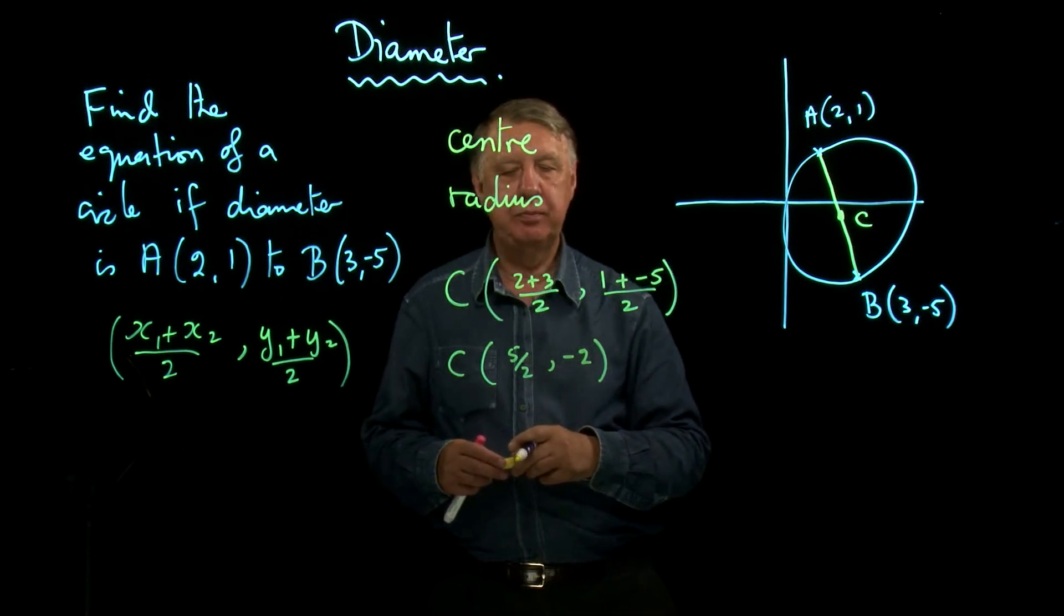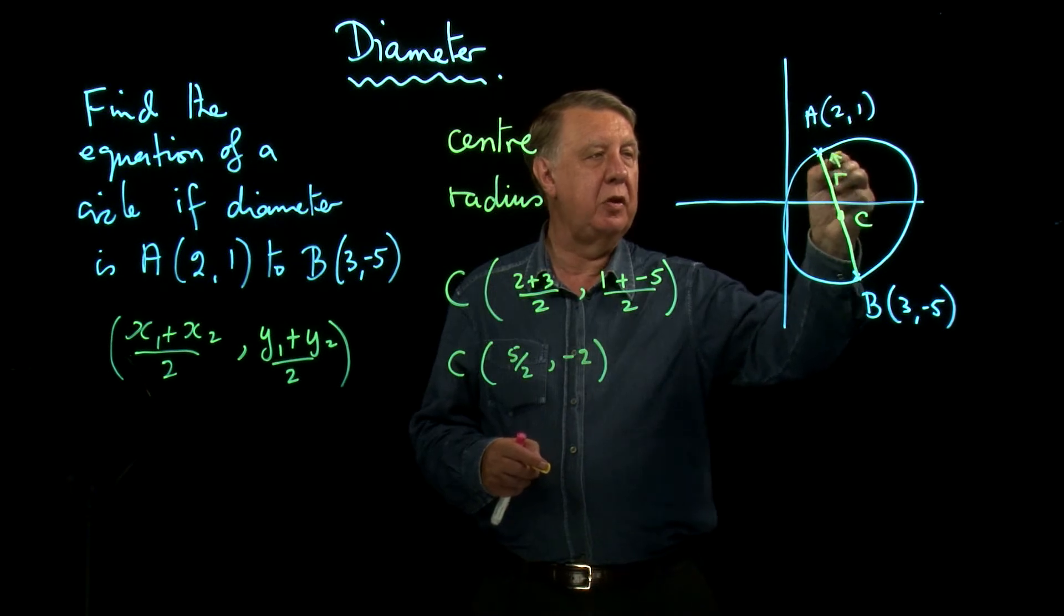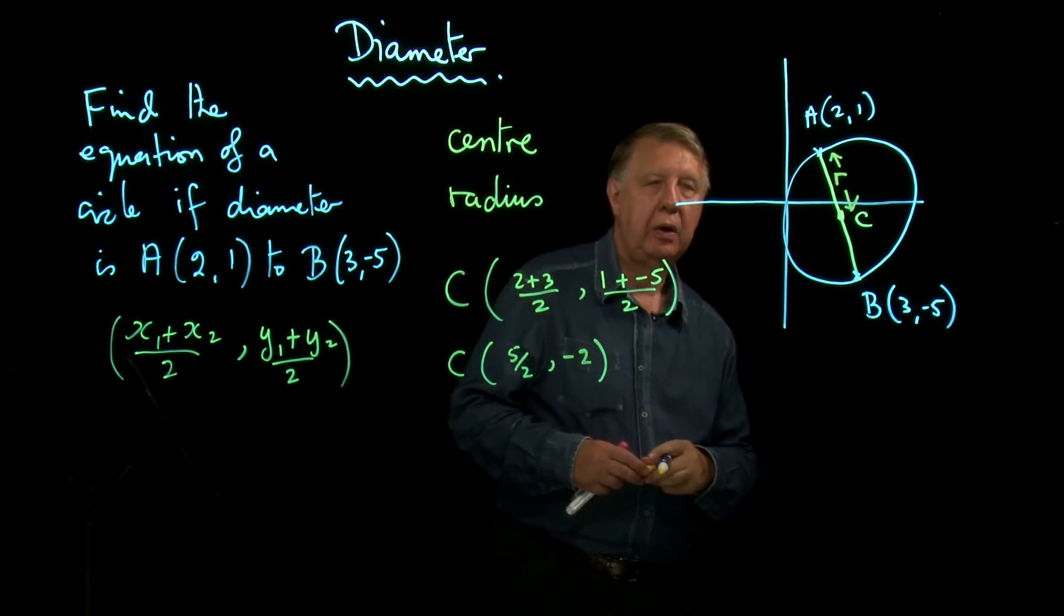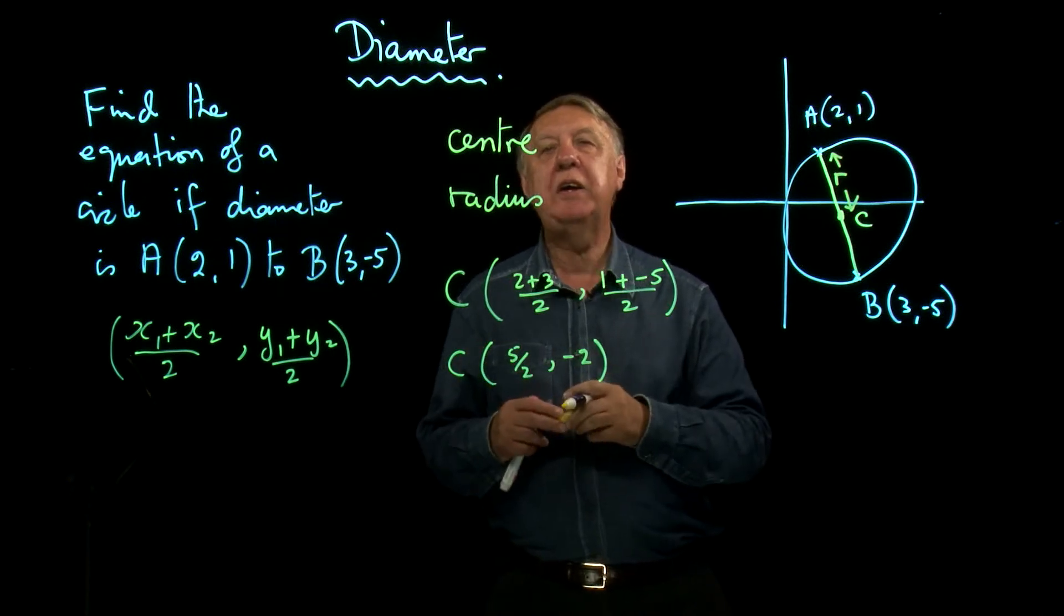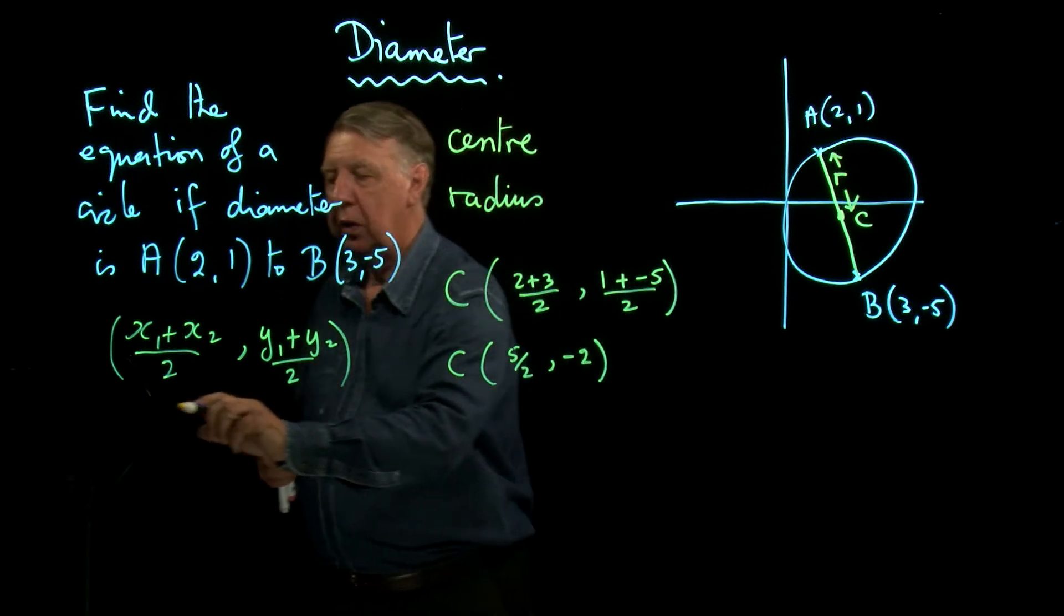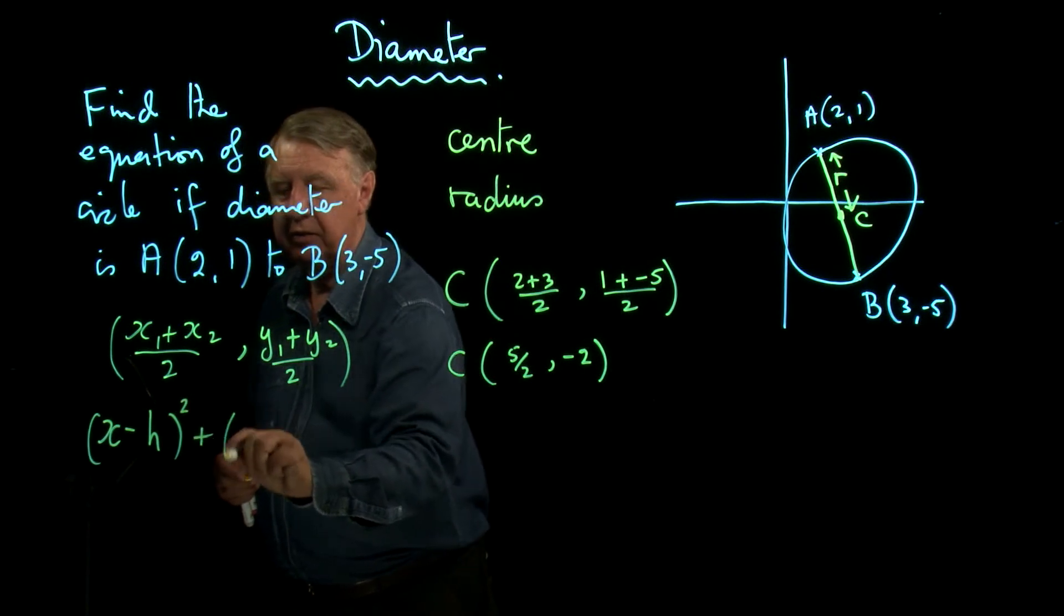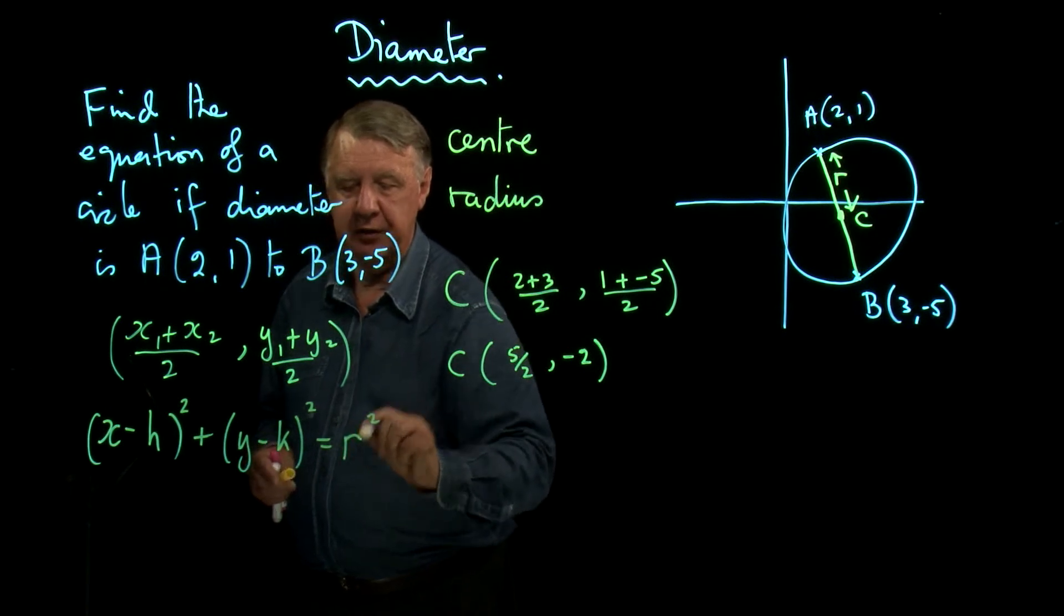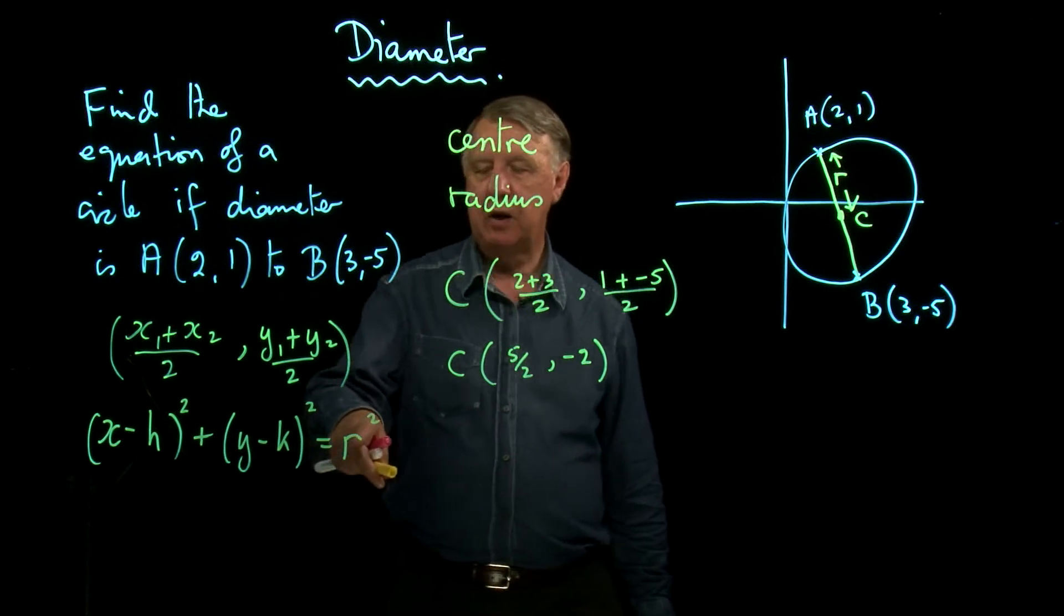Now the radius. Well the radius is of course the distance from the center to one of the points. So I want my distance formula. Now we can be a little bit clever because if you remember the formula for the equation of a circle it's X minus H squared plus Y minus K squared equals R squared, where H and K are the coordinates of the center, and R is the radius.